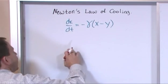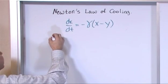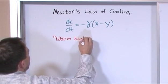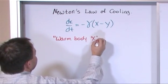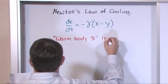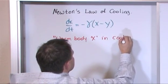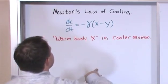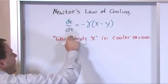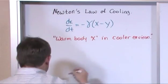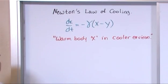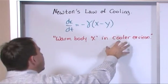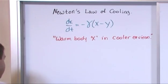Before I actually label everything, in your head I want you to think of the following phrase: warm body x in a cooler environment. So warm body x, that's why we have x here, in a cooler environment. So we know that the warm body x is going to lose temperature, decrease its temperature, until it reaches the temperature of whatever the environment is that we have.